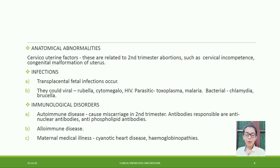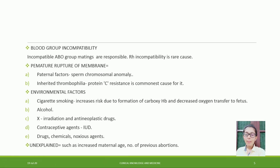Infections can cause fetal loss; these may be viral such as rubella and cytomegalovirus, HIV, or parasitic such as toxoplasma and malaria, or bacterial such as chlamydia and brucella. Immunological disorders include autoimmune disease causing miscarriage in the second trimester, with anti-nuclear antibodies and antiphospholipid antibodies responsible. Alloimmune disease, maternal medical illness such as cyanotic heart disease, hemoglobinopathies, and blood group incompatibility including Rh incompatibility are also recognized causes.